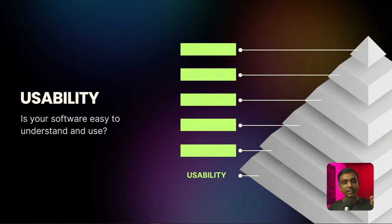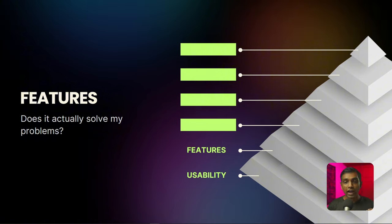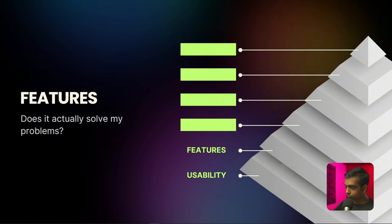What's the next thing you need to focus on once you've gotten usability under control? That is features. And I'm not talking about the number of features — I'm talking about whether the feature actually solves their problem. I remember a meeting with a project manager who used a popular project management tool but was annoyed because it lacked a key time-tracking function. Having the right features is more important than having many features.